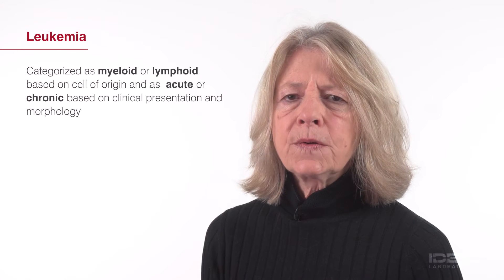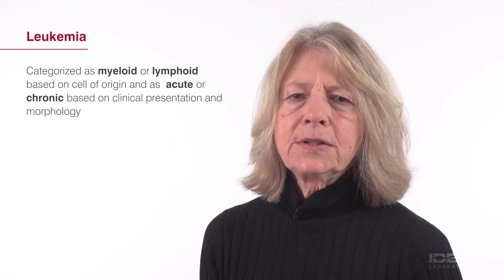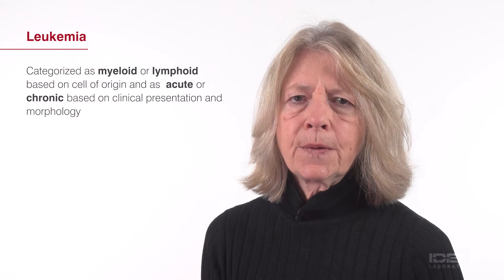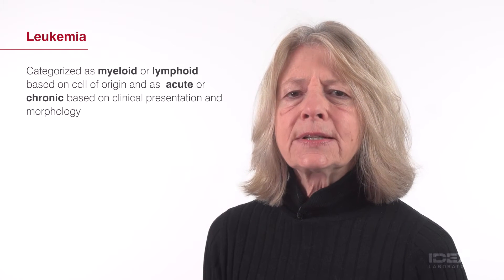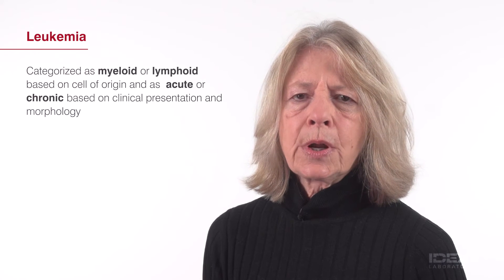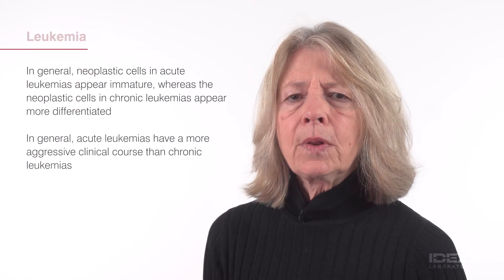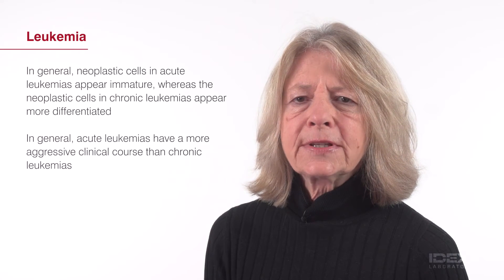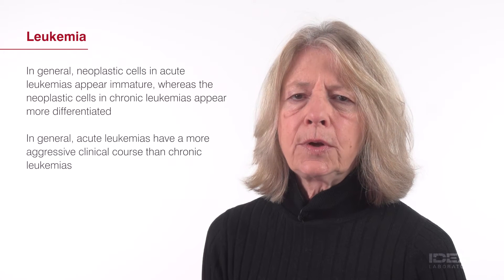Leukemias also are classified as acute or chronic, based on differentiation of the neoplastic cells and clinical course. The neoplastic cells in acute leukemias appear immature, whereas chronic leukemias are characterized by cells that appear more differentiated. In general, acute leukemias have a more aggressive clinical course than chronic leukemias.